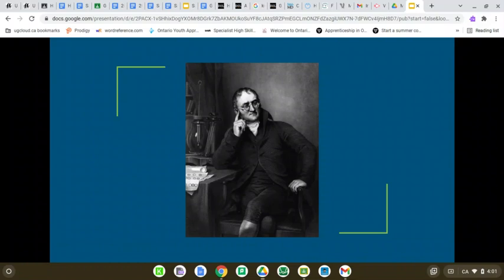John Dalton was the first scientist to study colorblindness. He was a chemist, physicist, and meteorologist. He was colorblind himself and conducted experiments comparing his vision to that of people he knew.